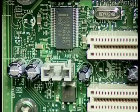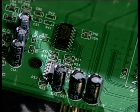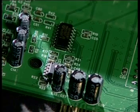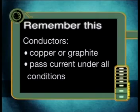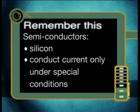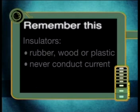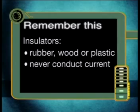Some materials like silicon and germanium are semiconductors. They are used to make microchips and only conduct electricity under specific conditions. So materials can be divided into three categories depending on the ease at which they allow electrical charge to flow: conductors, which pass current easily under all conditions; semiconductors, only under special conditions; and insulators, which never conduct electrical current.